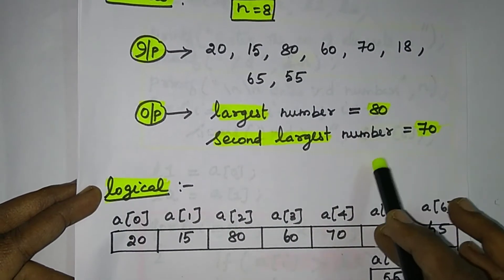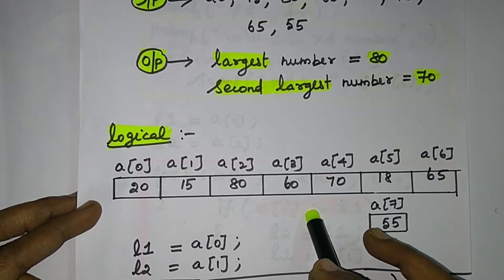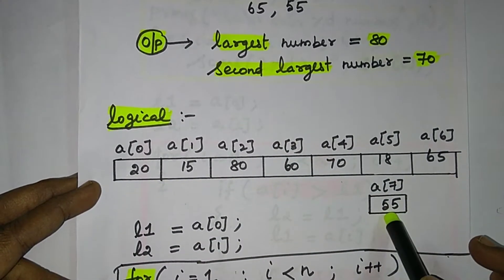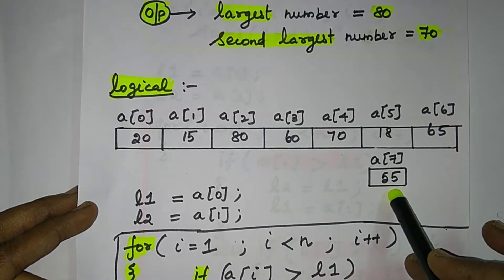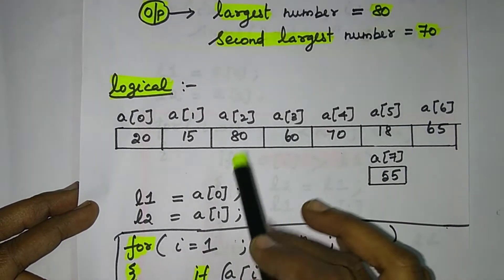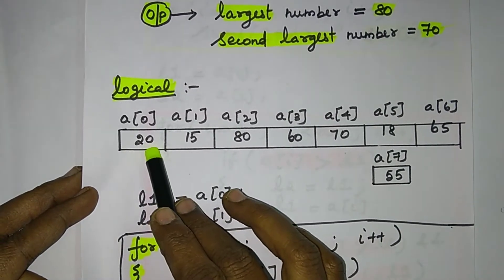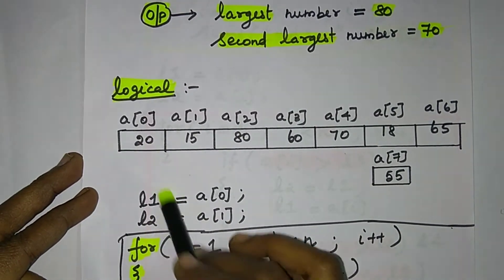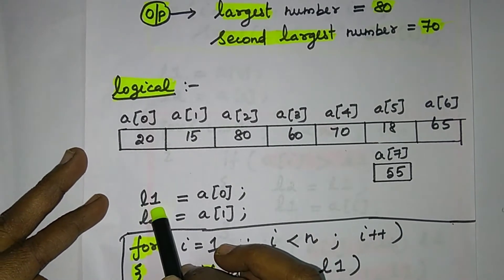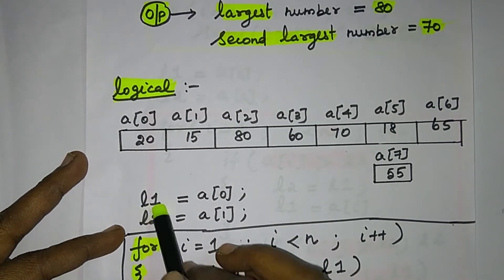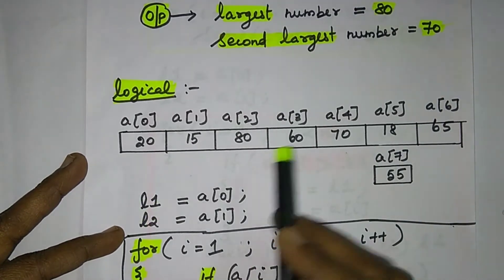Welcome to the video. Logically, let's see how the array input is in the memory. We need to choose two variables: L1 is the first largest, and L2 is the second largest. This is the answer.